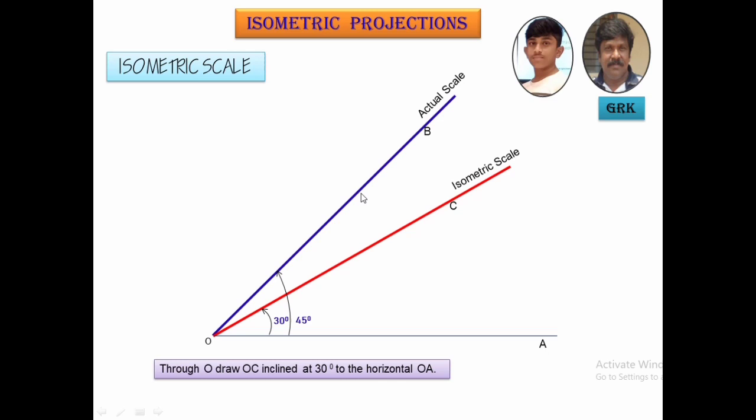This is where you're going to mark the actual lengths. This is where you're going to get the isometric length. Now, mark the actual centimeters along the length of the line in terms of either centimeters or millimeters. So, now you've marked it 0 to 10 centimeters all along the length of the actual scale along that 45 degree line.